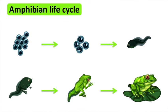The tadpole does not have any legs yet. After a few weeks, they grow their back legs and then their front legs. Its tail shrinks away and the baby frog emerges out of the water. The baby frog continues to grow into an adult frog.